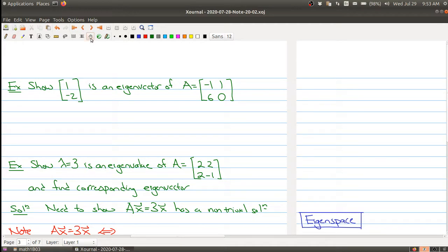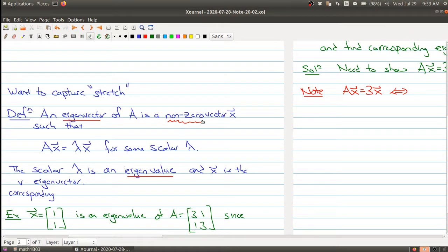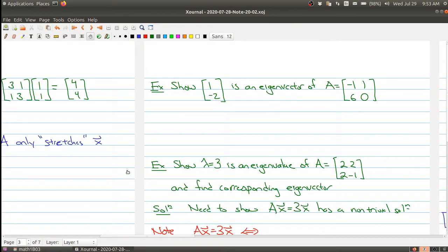According to the definition we will have an eigenvector if I multiply the matrix A by that vector I just get a scalar multiple of the thing that I start with. So it's quite easy to check whether something is an eigenvector.